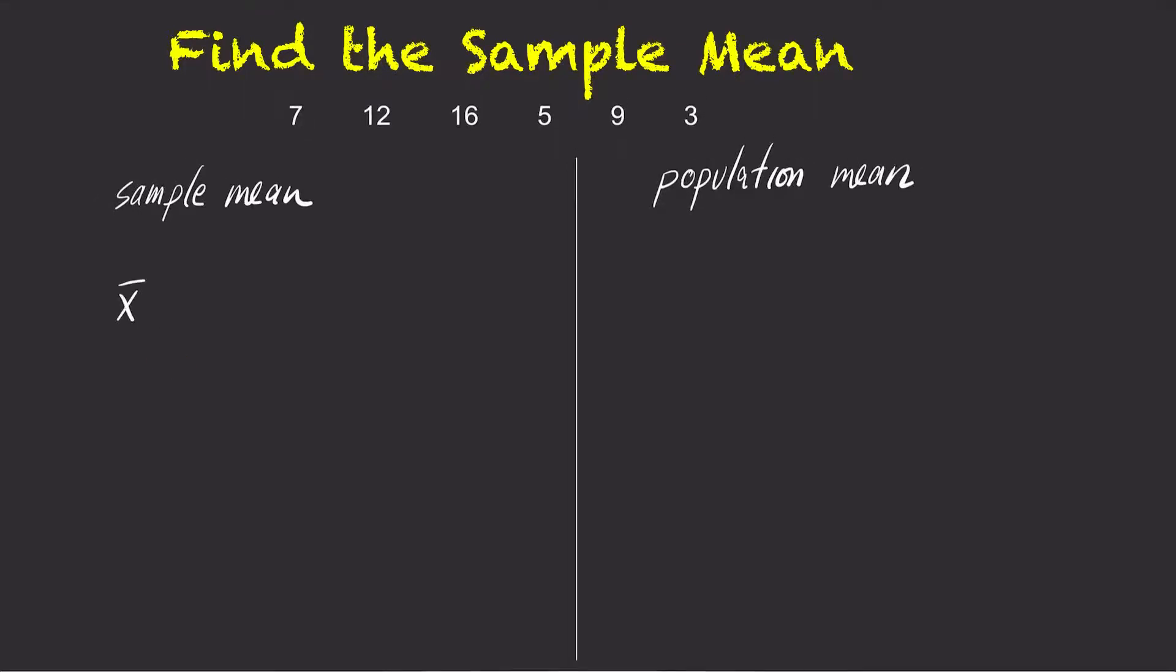For sample data, we use x bar to represent the sample mean. To find x bar, take each number from the data set, add them up, and then divide the sum by the sample size.